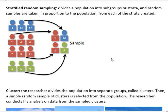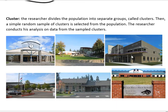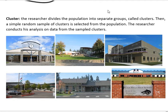Finally, we have cluster sampling. In a cluster study, the researcher divides the population into separate groups called clusters. Then a simple random sample of clusters is selected from the population, and the researcher conducts analysis on data from the sampled clusters. For example, I have pictured here six local high schools. Let's say I wanted to find out how high school students felt about the cost of college education — how freshmen, sophomores, juniors, and seniors feel. Since I can't talk to every high school student in my area, I take those six high schools and randomly choose one.